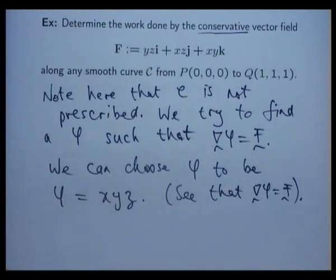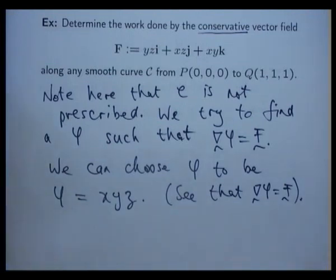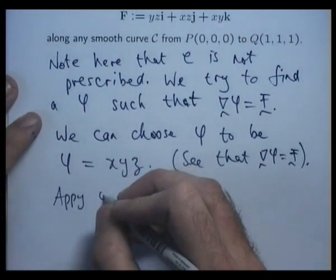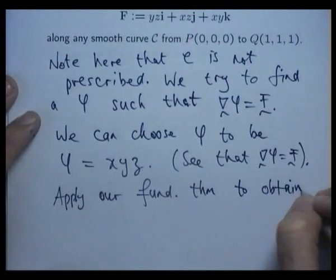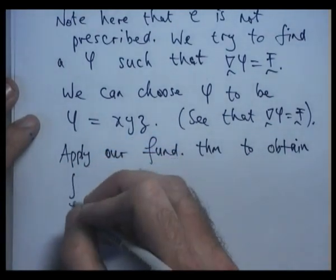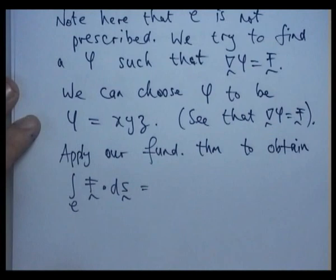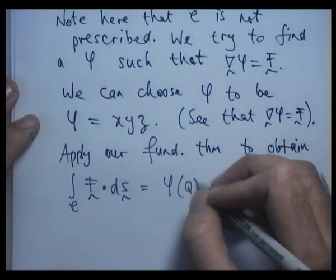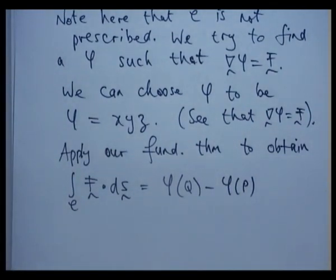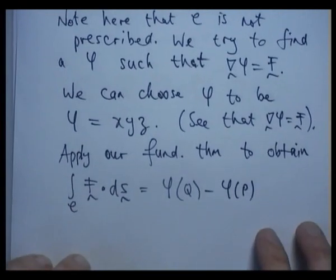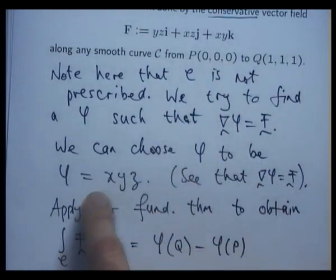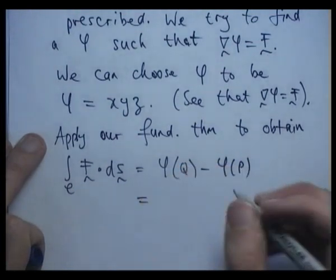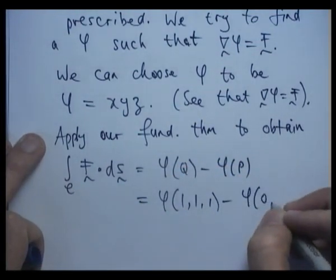Now, what does this mean for the computation? Well, it means that the computation for our line integral depends on the end points only. So we apply our fundamental theorem to obtain the following. The line integral depends on the initial point and the terminal point only. So at (1, 1, 1), phi is going to be 1 times 1 times 1, and at the origin phi is 0.